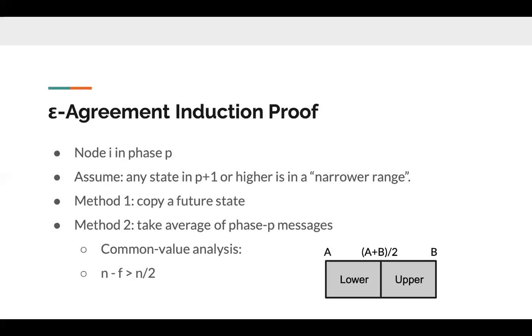So, in this case, it is guaranteed that no node can receive messages only from the lower half, because n minus f is strictly greater than n over 2, which is further greater than or equal to the size of the lower half.